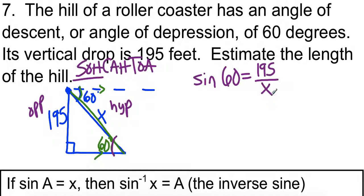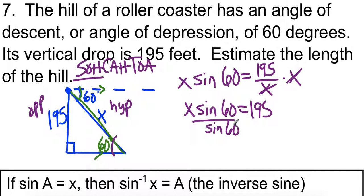We need to solve for X. Right now the X is in the denominator, so I'm going to multiply both sides by X. I get X sine of 60 equals 195. And then we're going to divide both sides by the sine of 60. We'll put that in the calculator quick. And 225.2 feet.